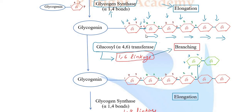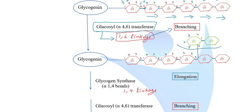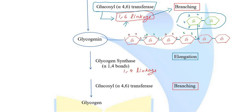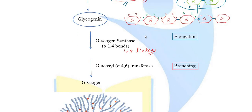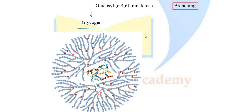The 1,6 linkage results in branching of the glycogen molecule. The branching enzyme, glucose alpha-4,6 transferase, connects carbon 1 to carbon 6, creating branch points. This elongation and branching process is repeated n times until it finally forms the macromolecule that is glycogen.